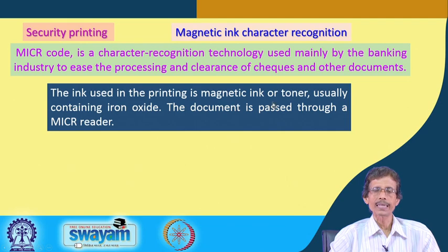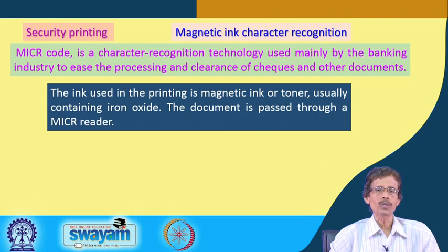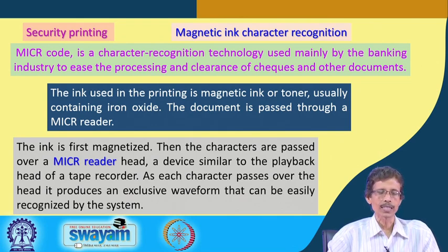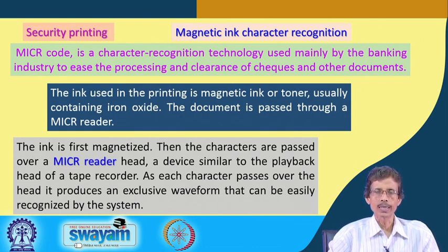The magnetic ink or toner containing iron oxide is first magnetized, then characters are passed over the MICR reader head — similar to a tape recorder playback head. Each character produces a unique waveform that the system recognizes. The MICR reader identifies the check number, bank name, branch, and authenticity. Thus, inorganic pigments find application from luminescent properties to magnetic properties for many useful purposes.